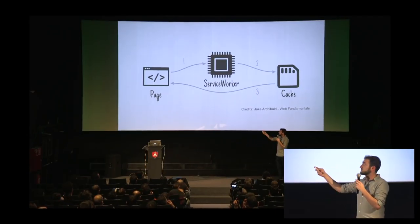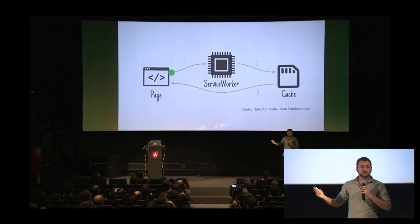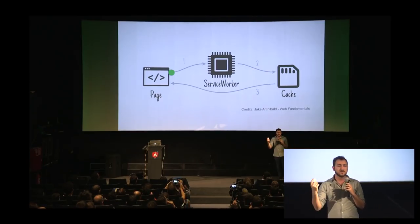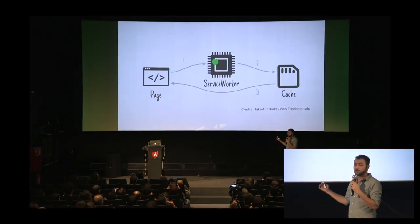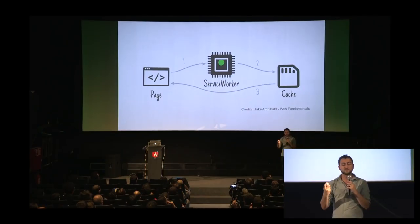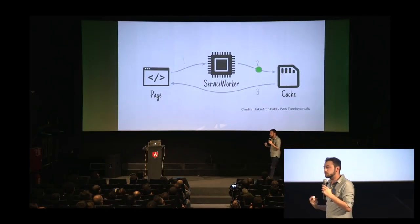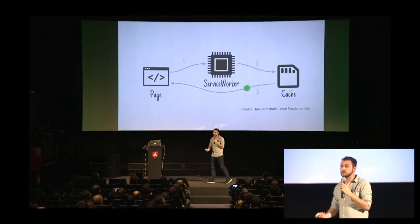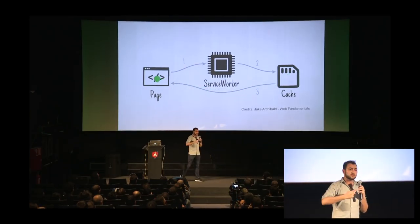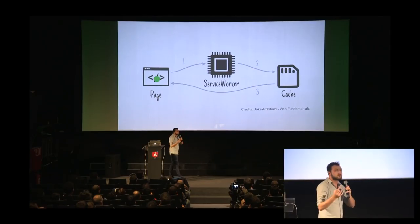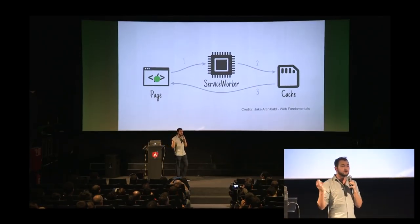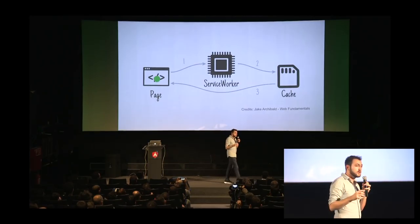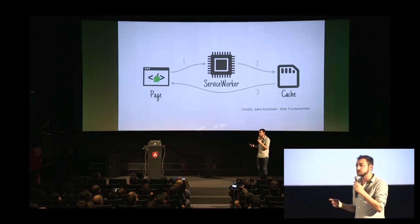SWToolbox gives us multiple strategies: fastest, cache first, and network first. With cache-first strategy, the Service Worker intercepts the request, forwards it to the cache, gets the data, and returns it to the page. If you've fetched data from an API and saved it, you can tell the Service Worker to get it from the cache.